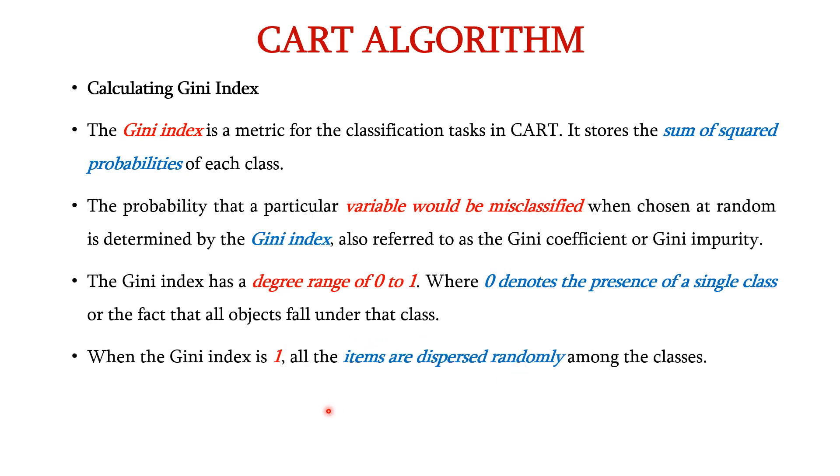When the Gini index is 1, all items are dispersed randomly among the available classes. When Gini index is 0.5, the elements are distributed evenly among many classes. So, 0 indicates the purity of the node and 1 indicates that it is completely impure.